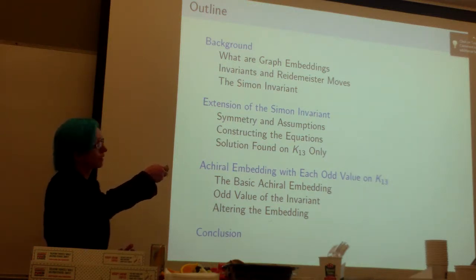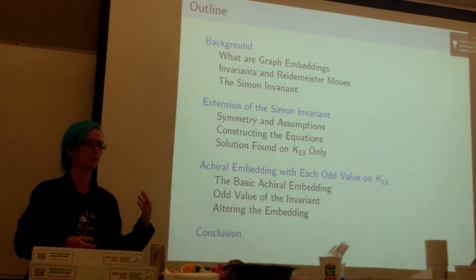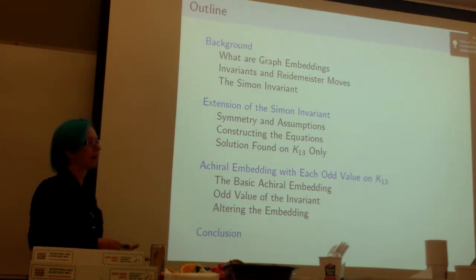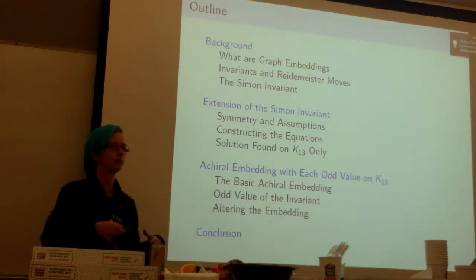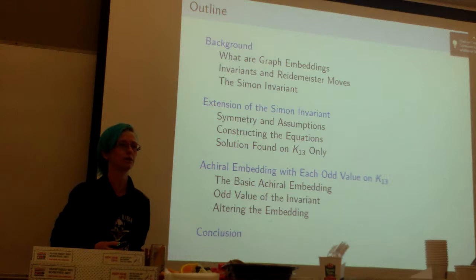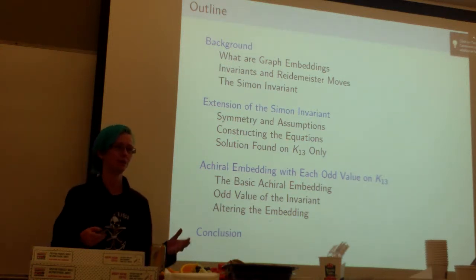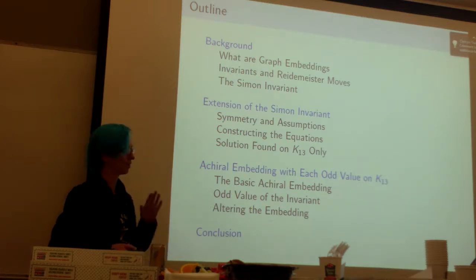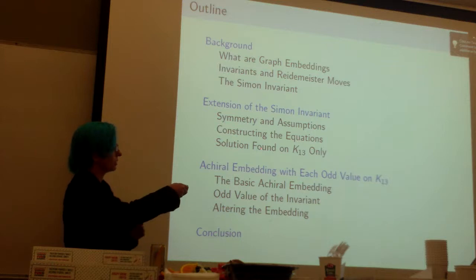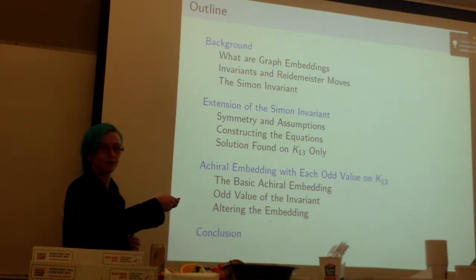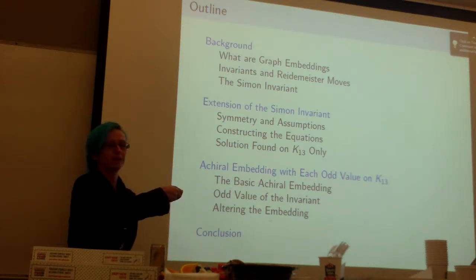Then I want to give a little bit of background on the original Simon invariant and the graphs on which it was defined. After that I'll talk about how we extended it, which assumptions were used, what structure was used to do this, and then I want to show you the results for the graphs where it worked and the ones where it didn't. It didn't work on all the ones we tried.